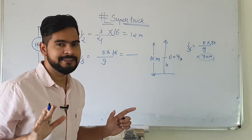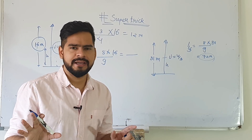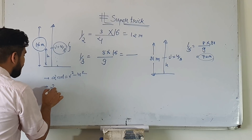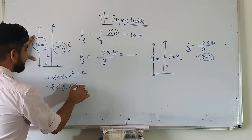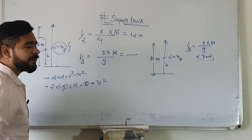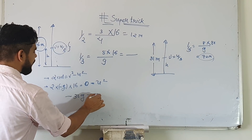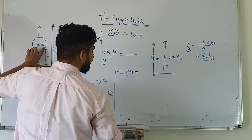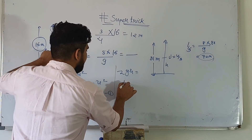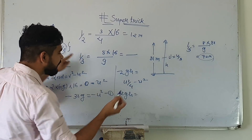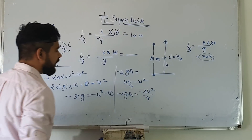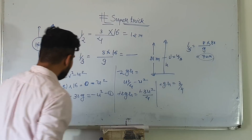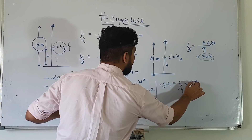Now let me show the conventional solution. Going upward, applying the formula: v² minus u² = minus 2g × distance. At maximum height of 16 meters, final velocity is zero. So: 0 minus u² = minus 2g × 16, which gives minus u² = minus 32g — this is equation 1. Now suppose height h is where the velocity becomes half, so final velocity = u/2.